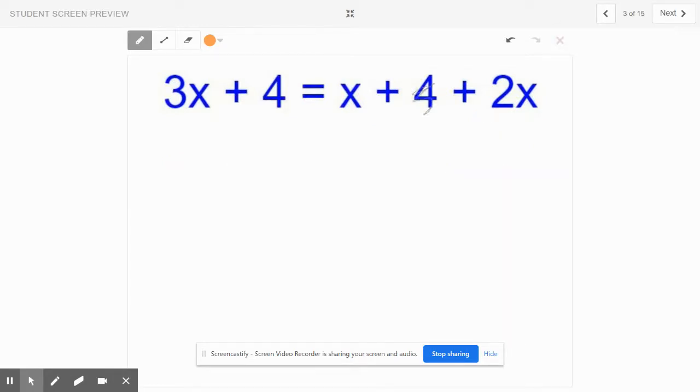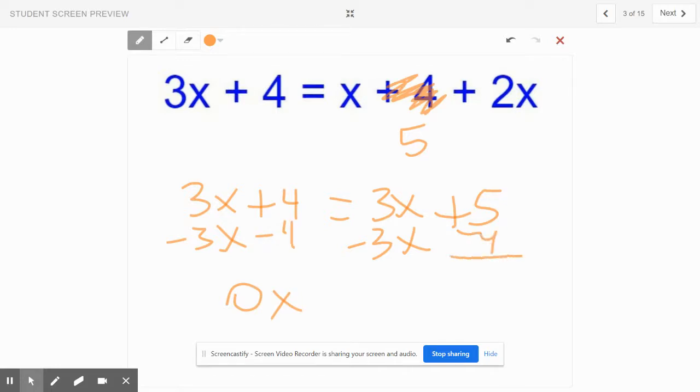But what if this was not four? What if this was five or six or seven or anything else but four? Then you would have gotten three x plus four equals three x plus five. Wait a minute, you would move this over, zero x. Okay, I know it's either no solution or infinite. Equals one. What times zero, what in this world times zero equals one? Nothing. So when the constants aren't the same, it's no solution, and you know this. I'm just going over it with you guys.